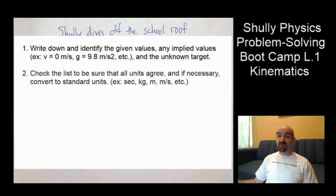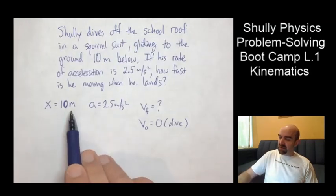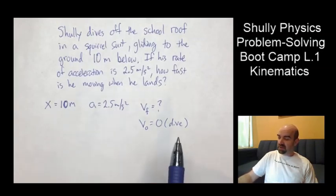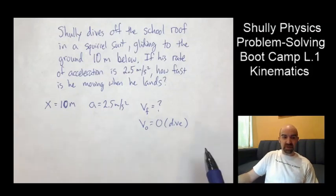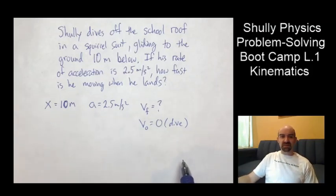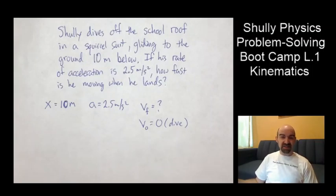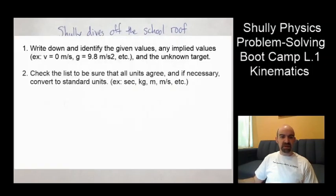Check the list to be sure that all units agree and if necessary convert to standard units. So if I'm looking at this, I've got meters, meters per second squared. So meters and meters agree. And my velocity here is zero meters per second. So I don't have any conflicts. So if I did have something like minutes in one value and seconds in another, I'd probably want to multiply that minutes value by 60 to get the number of seconds. But I don't have that problem here. So I checked it and made sure I'm not going to make any mistakes with that by opposing units. It's always good to put them in seconds, kilograms, meters, meters per second. But there's nothing to do in that step. We just checked it out.